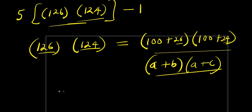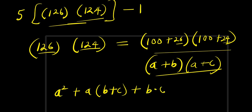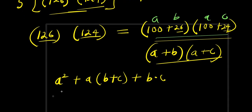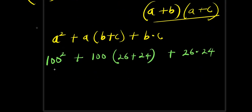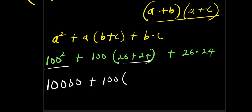To expand this, we make use of the identity a plus b times a plus c equals a squared plus a times b plus c plus b times c. From this expression, 100 is our a, 26 is our b, and 24 is our c. So we have 100 squared, plus 100 times 26 plus 24, plus 26 times 24. That gives 10,000 plus 100 times 50, plus 26 times 24, which equals 624.